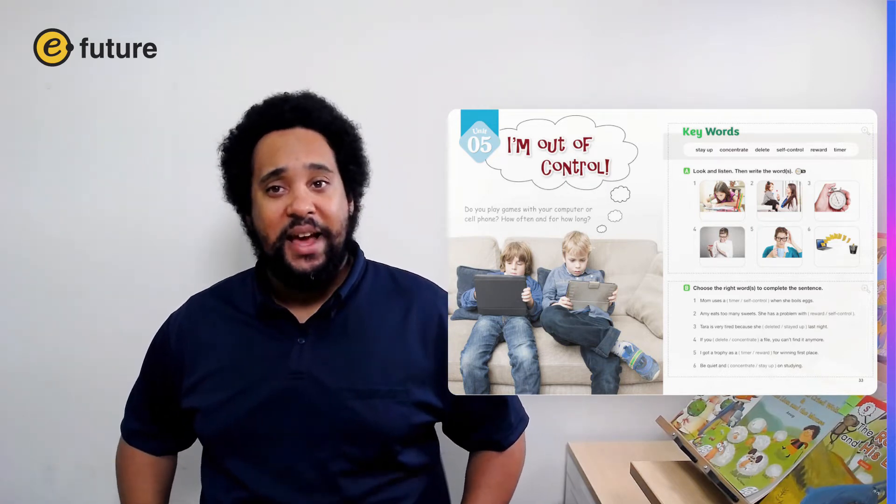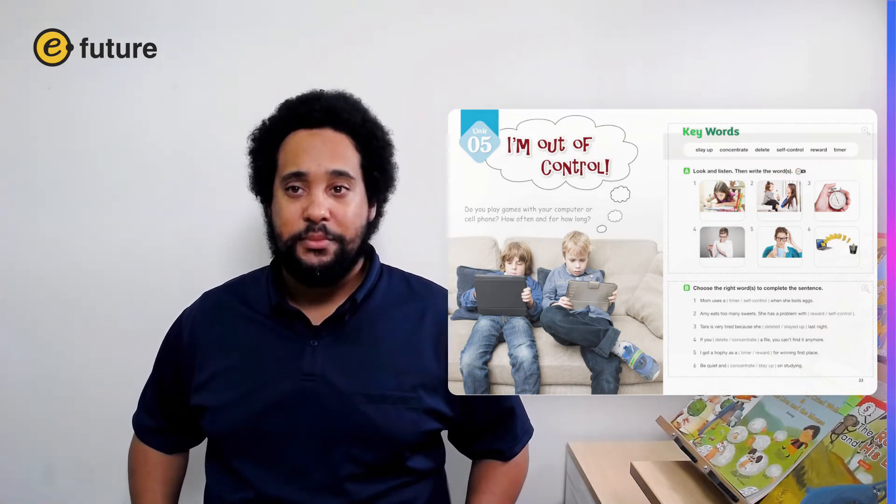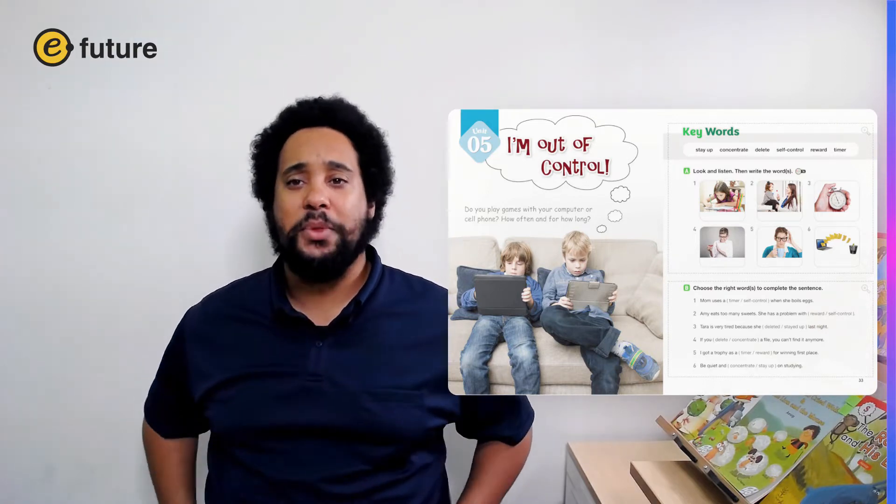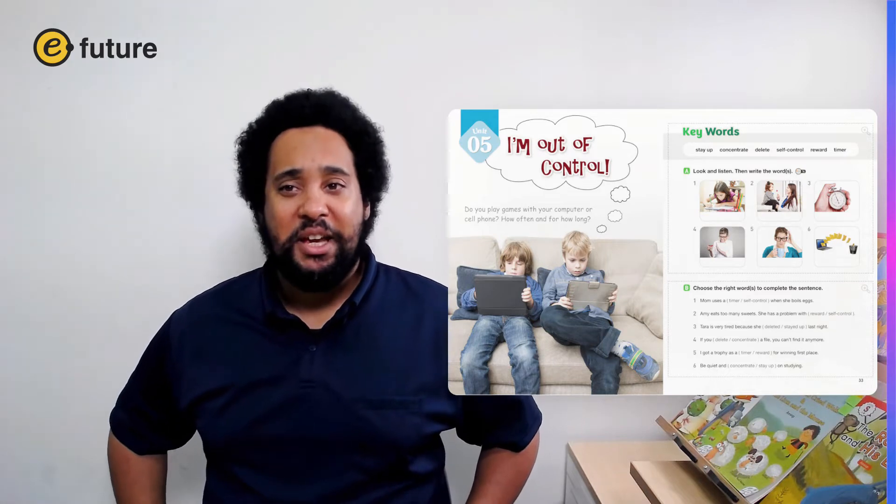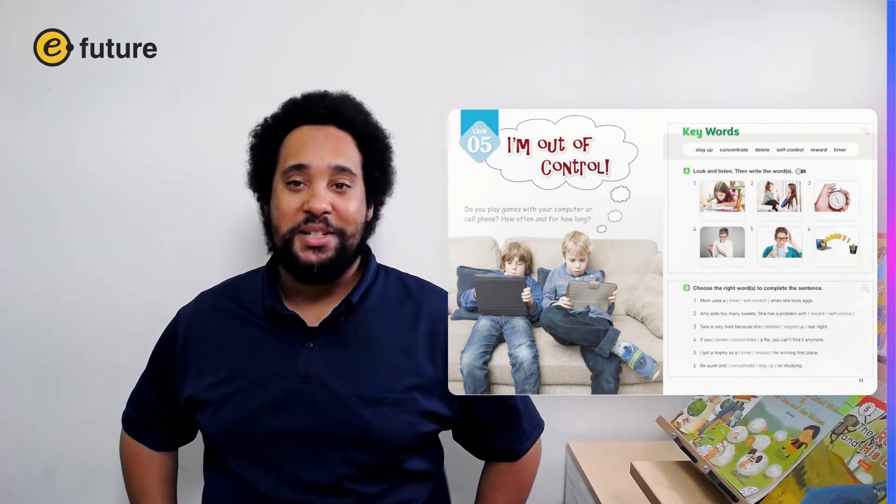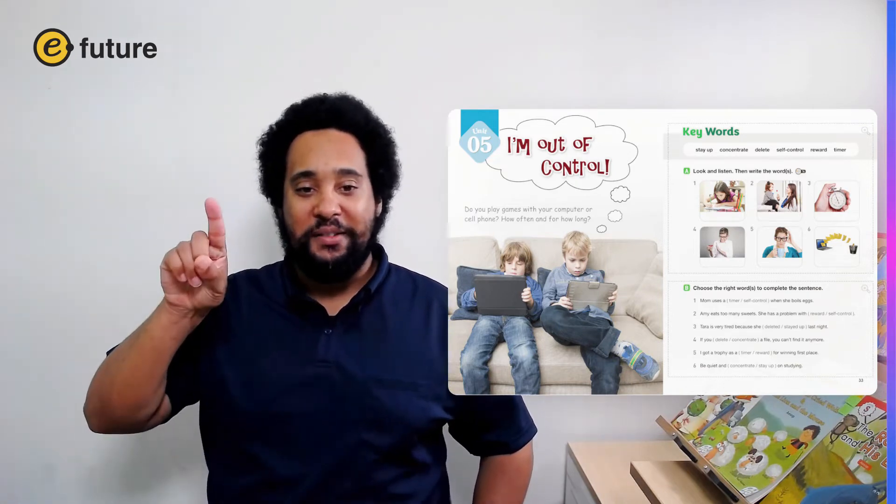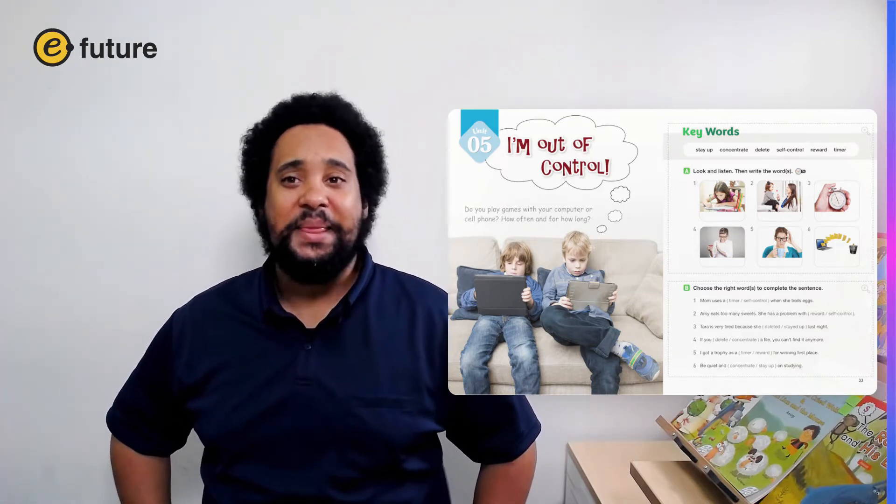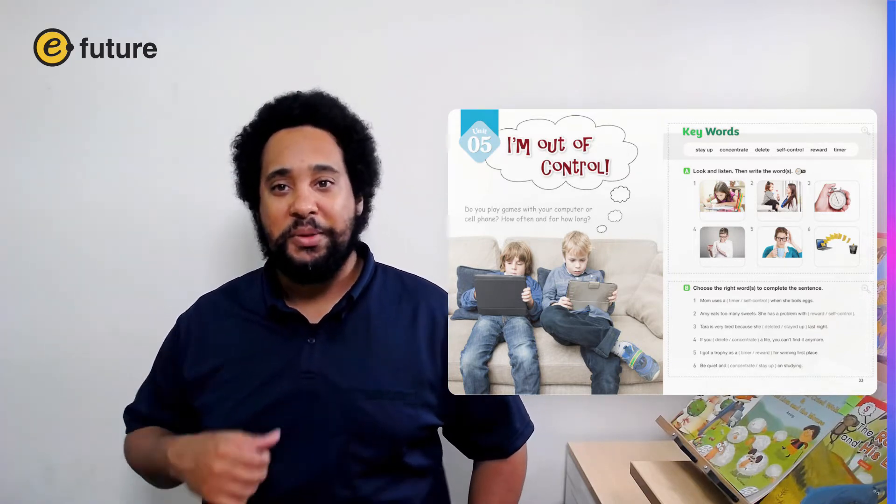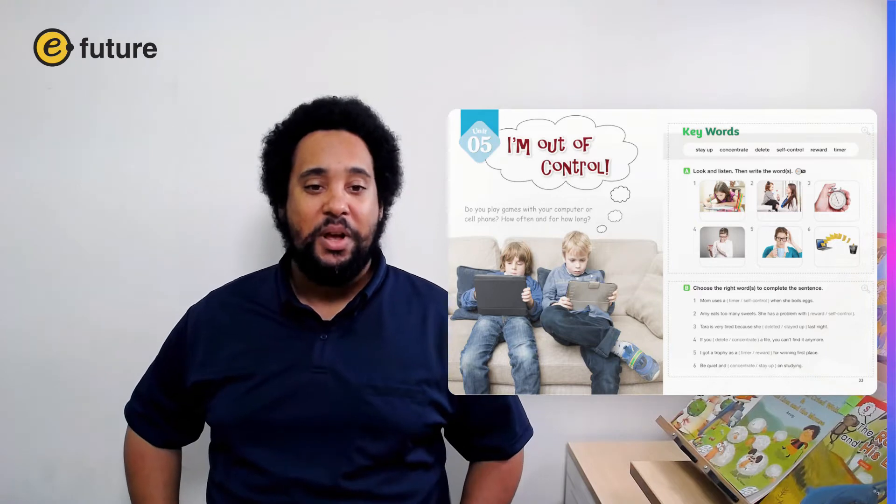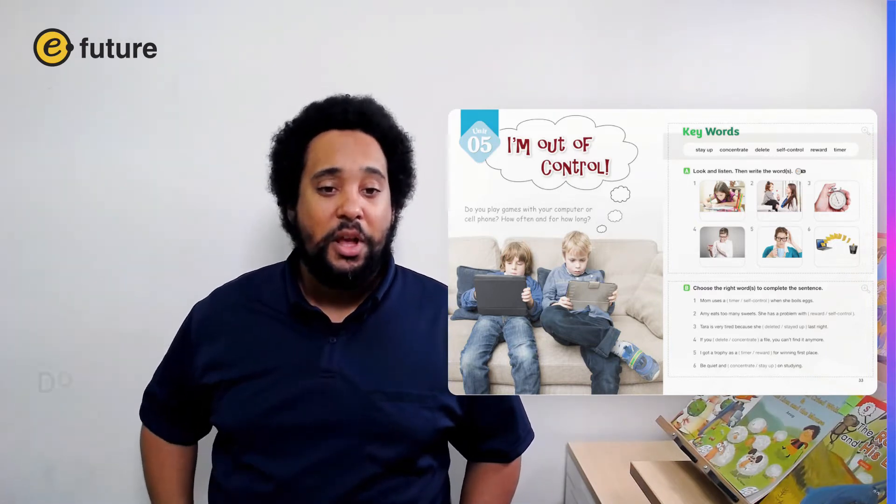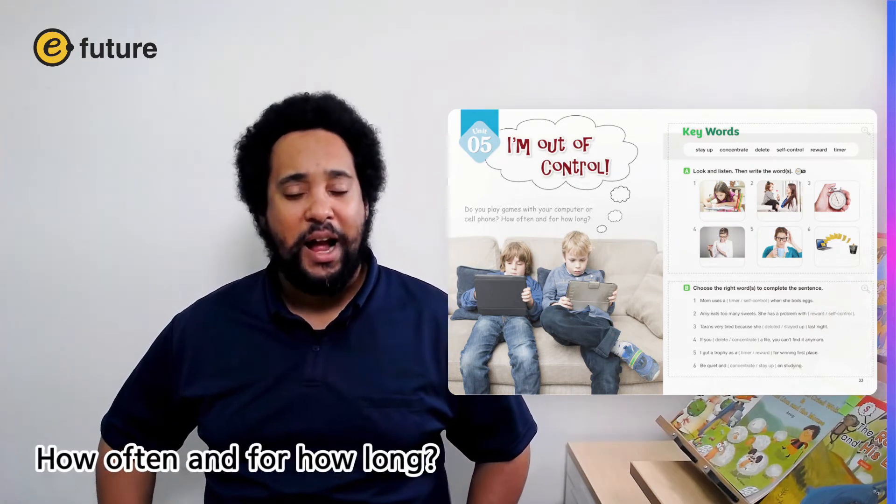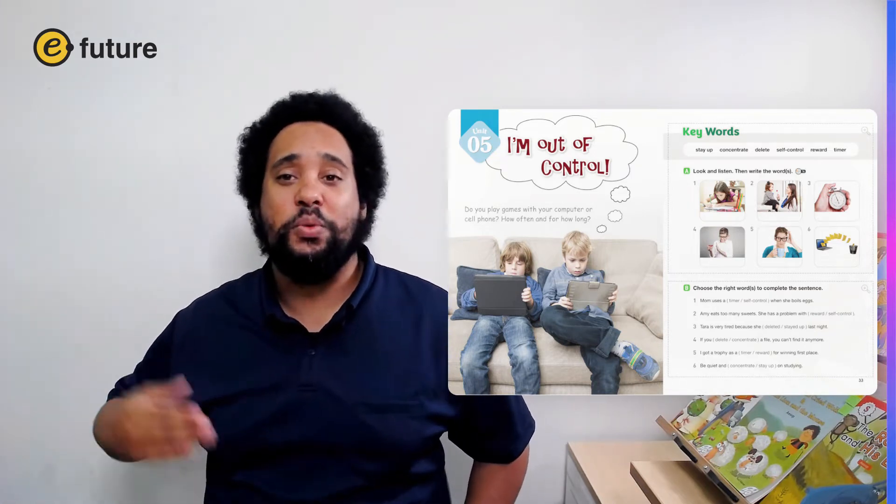As you can see, our title is, I'm out of control. So I think one of these boys uses their computer or their tablet a little too much. During our lesson today, think about the two questions on the page. Let's read them together now. Please use your reading finger to follow along. Think about them and then decide if you have a problem. We'll talk about these questions again later at the end of the class.